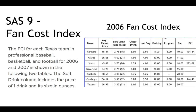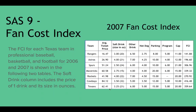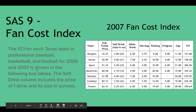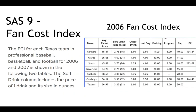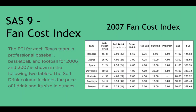We'll look at this matrix. The FCI for each Texas team in professional baseball, basketball, and football for 2006 and 2007 is shown in the following two tables. The soft drink column includes the price of one drink and its size in ounces, with the size in parentheses as described in the column title. This is the 2007 table; the other is 2006 — that's the only difference between the two slides.